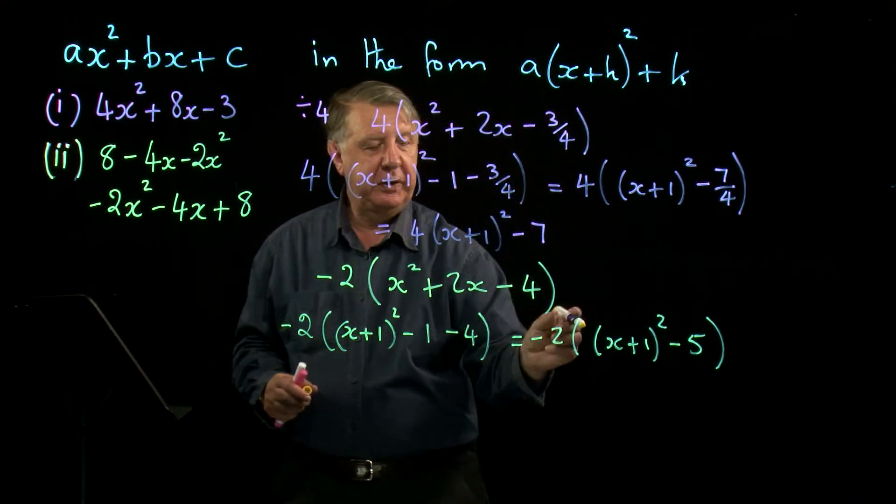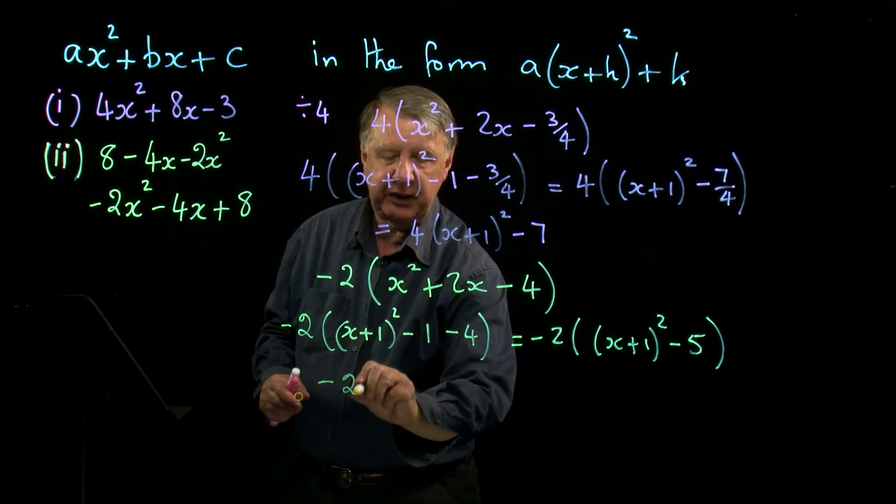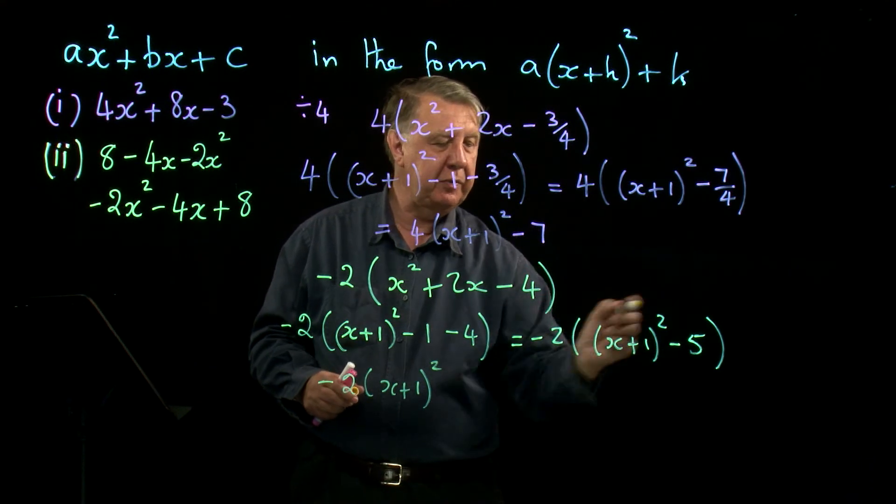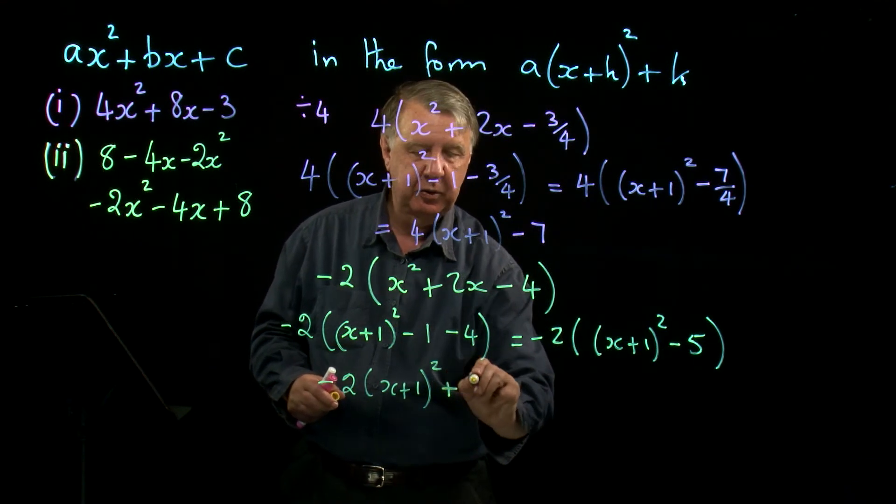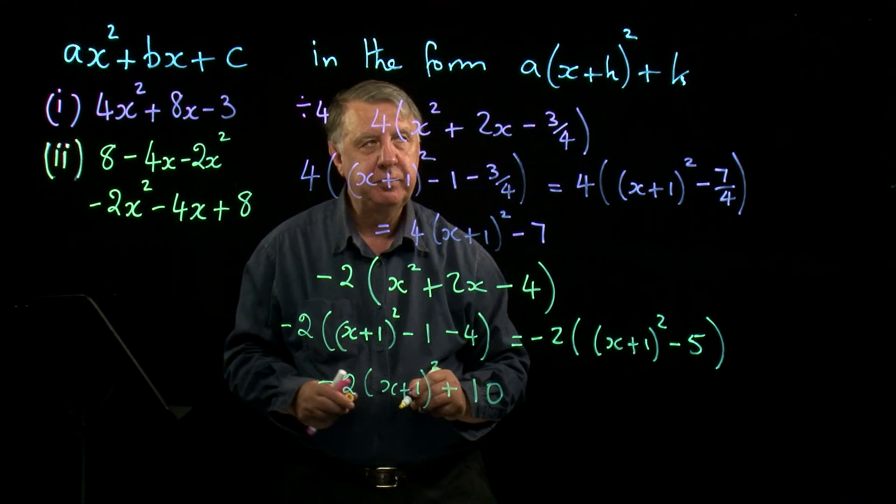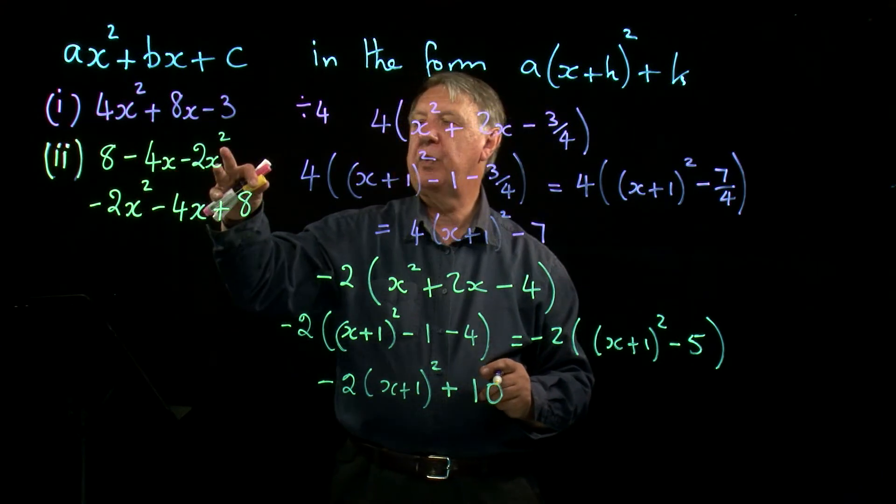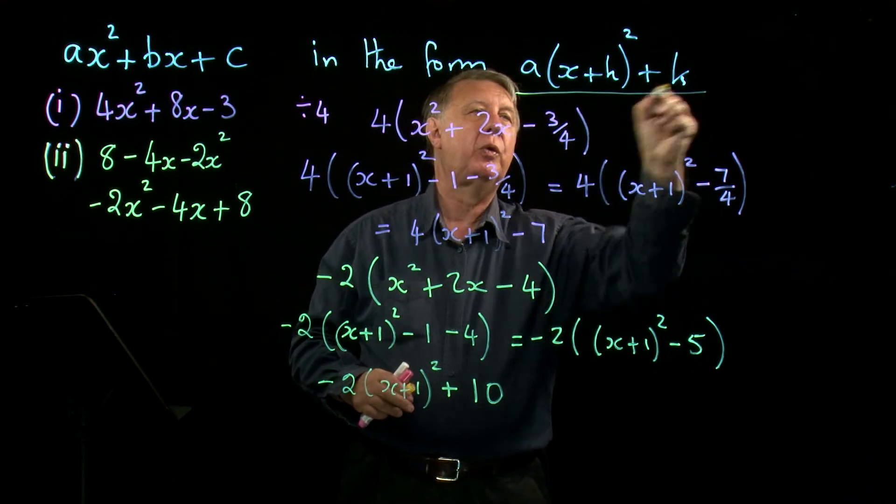Now we get rid of the outside bracket, so it's negative 2 times x plus one squared. Then I've got negative two times negative five, which is plus ten. So I have now written this one in the form ax plus h squared plus k.